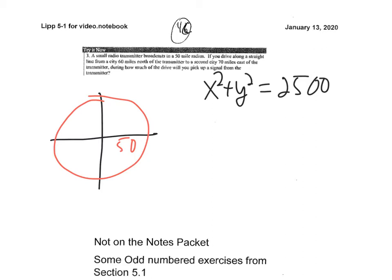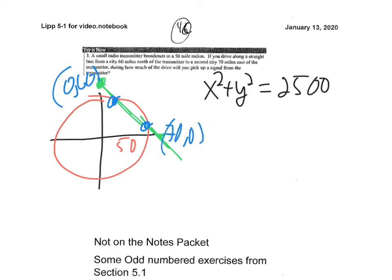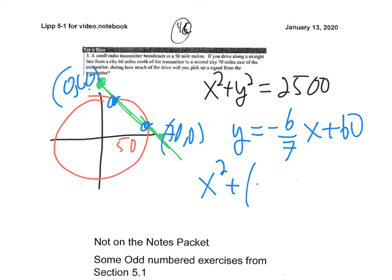There's a road — I drive along a line from 60 miles north to 70 miles east. We're looking for how much of the drive will be able to pick up the signal. The coordinates are (0, 60) and (70, 0), giving a slope of −6/7 and y-intercept 60, so y = −(6/7)x + 60. Substituting into x² + (−(6/7)x + 60)² = 2500.